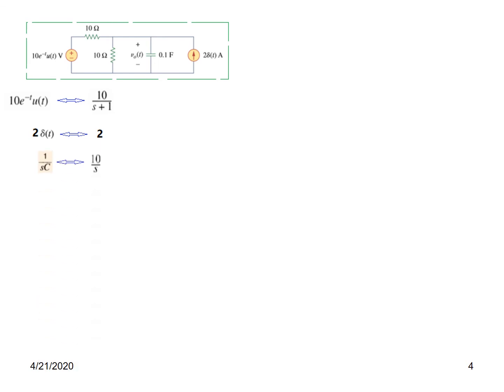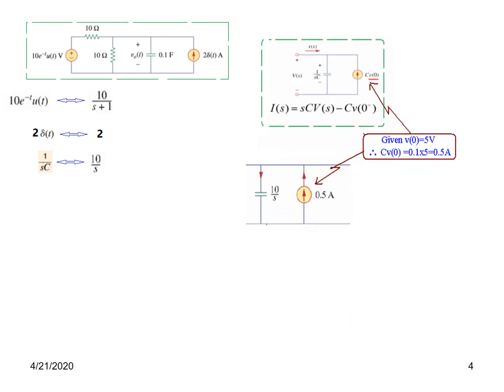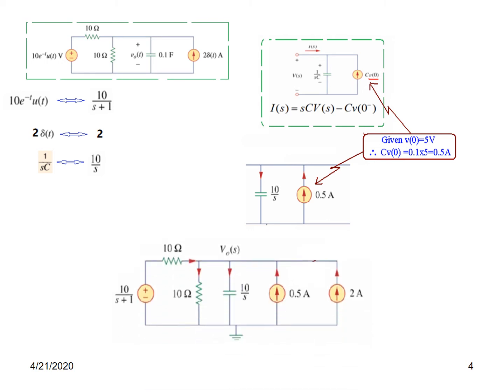The capacitor's impedance in the s-domain is 1/sC, which equals 10/s (since C = 0.1 F). The parallel current source has value C·v_naught. Since v_naught is given as 5 volts and C = 0.1 F, C·v_naught = 0.1 × 5 = 0.5 amperes. We'll now plug these values into the circuit.